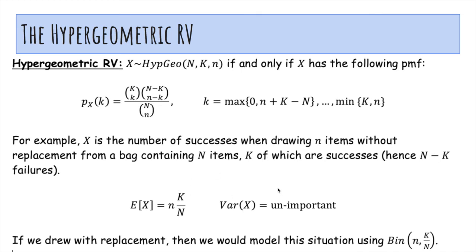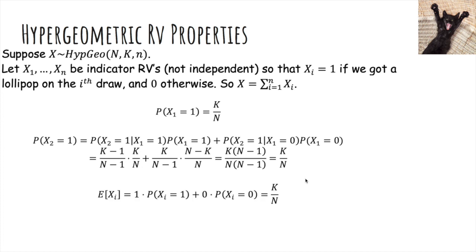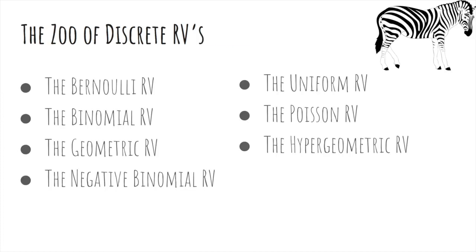And here are the mean and variance. You can actually derive it yourself. And you can read this if you're interested in deriving the expectation. And here's the zoo of random variables that we've talked about so far.